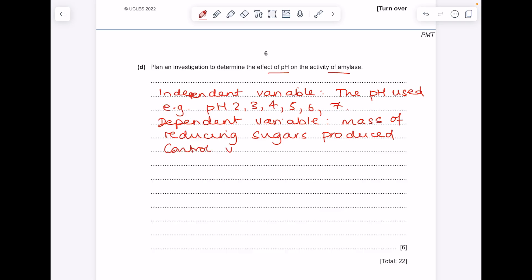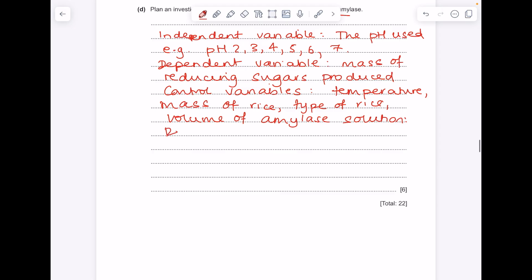What about our control variables? So what sorts of things do we need to keep the same to maintain a fair test? You want the temperature to be the same. Mass of rice, or you could say starch source. They're really flexible here. Type of rice. Volume of amylase solution. You could also say concentration of amylase solution. Let's repeat at least three times for each pH used. Be nice and precise here. And calculate an average.